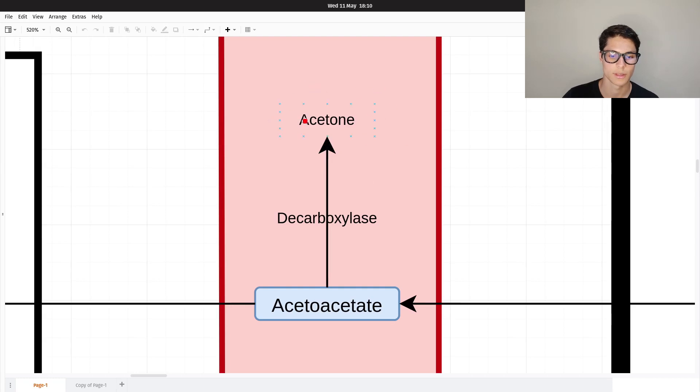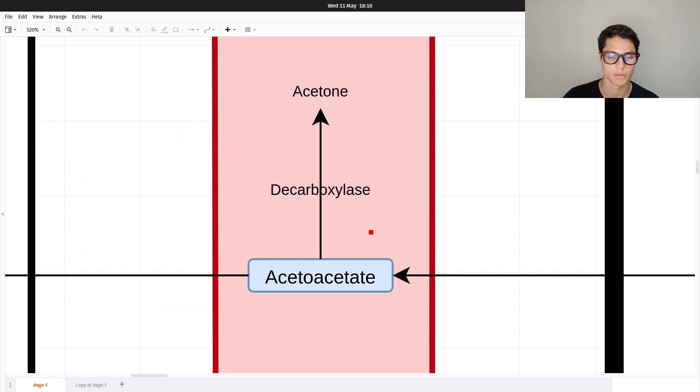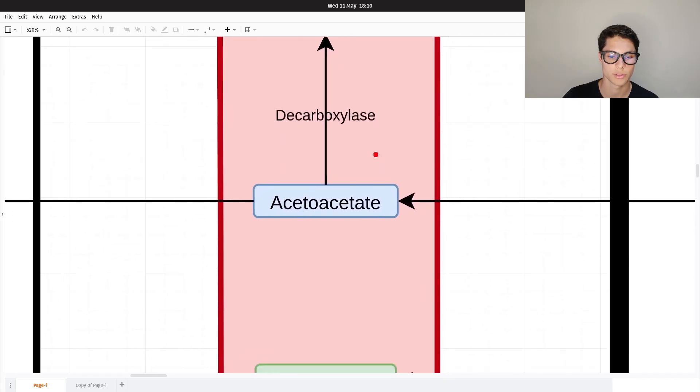Acetone is potentially harmful for the body because it can lower the bloodstream pH.